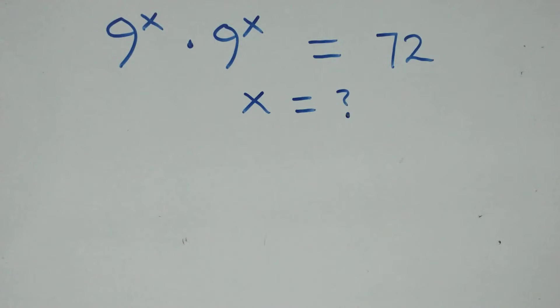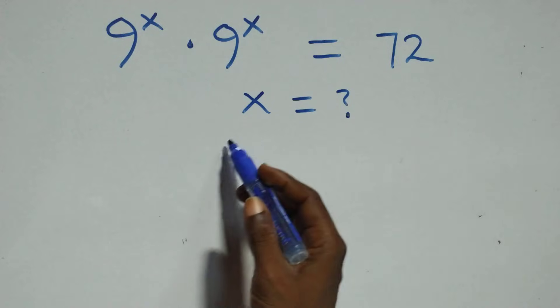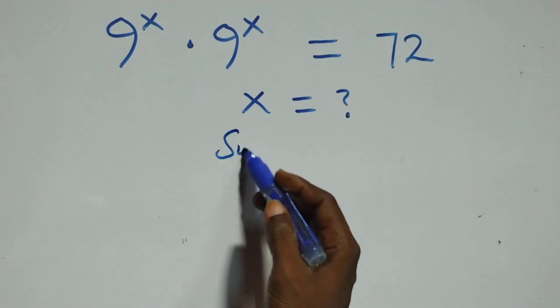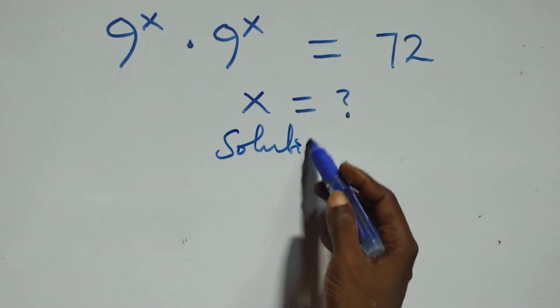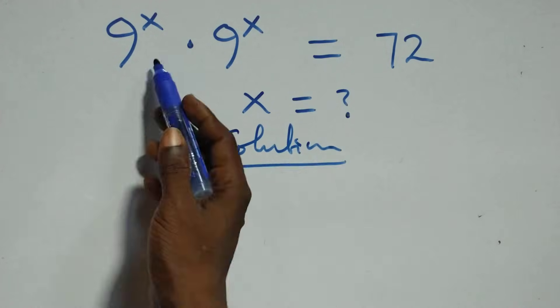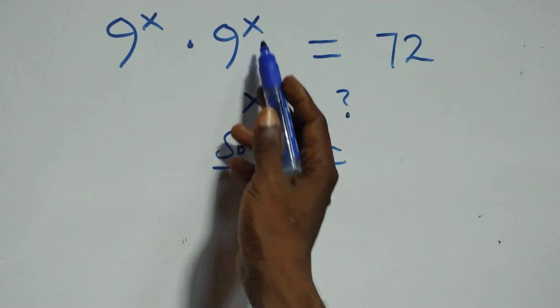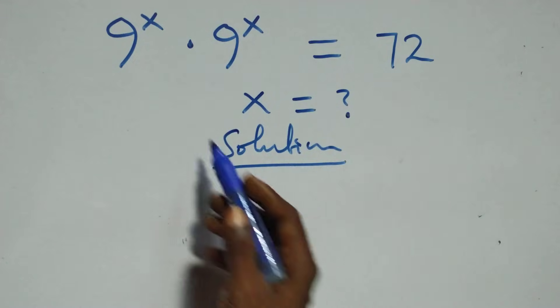Hello, you are welcome. How to solve this nice explanation equation solution. What we have here is 9 raised to the power x times 9 raised to the power x equals to 72.